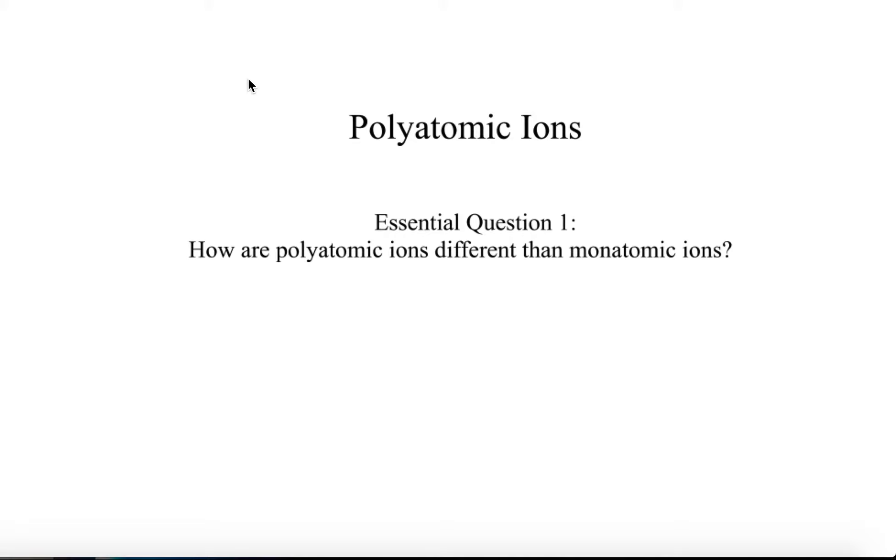There are actually some compounds, not ionic, that have more than one atom that actually do have a charge to them. They're called polyatomic ions. So what we want to know is how exactly are these polyatomic ions different than the monatomic ions?